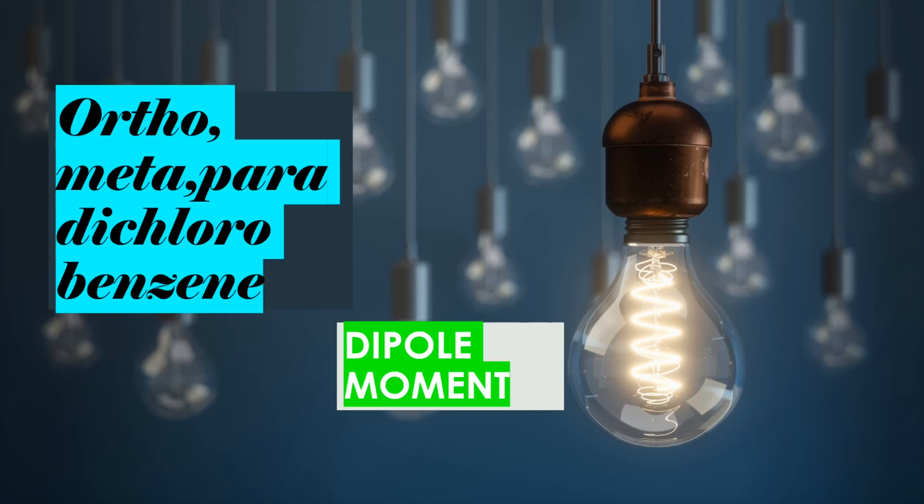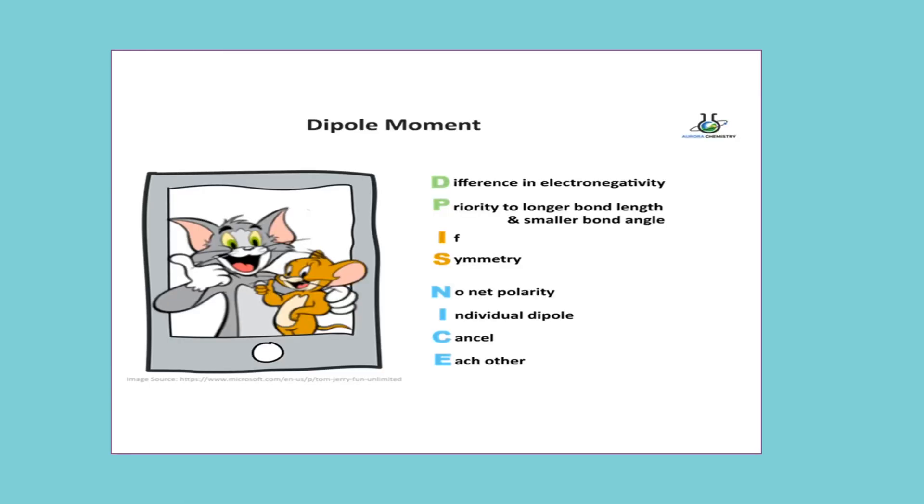I will give you super easy tips to remember dipole moment based questions by using a simple mnemonic: DP is NICE. Here, D stands for difference in electronegativity, P for priority to longer bond length and smaller bond angle, IS for if symmetry.